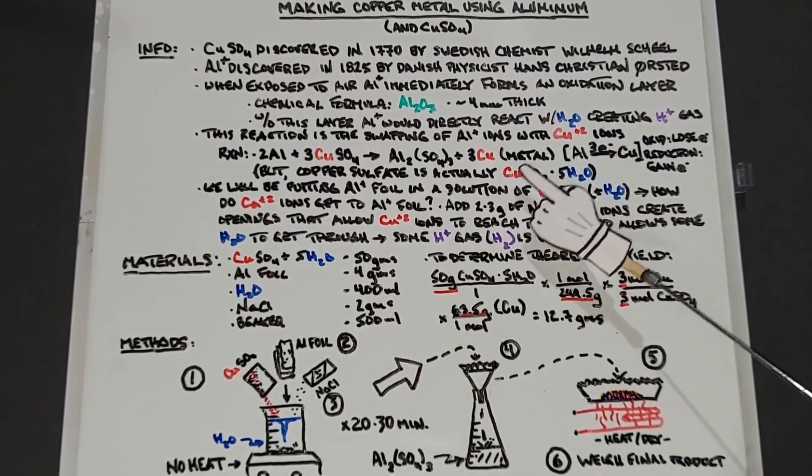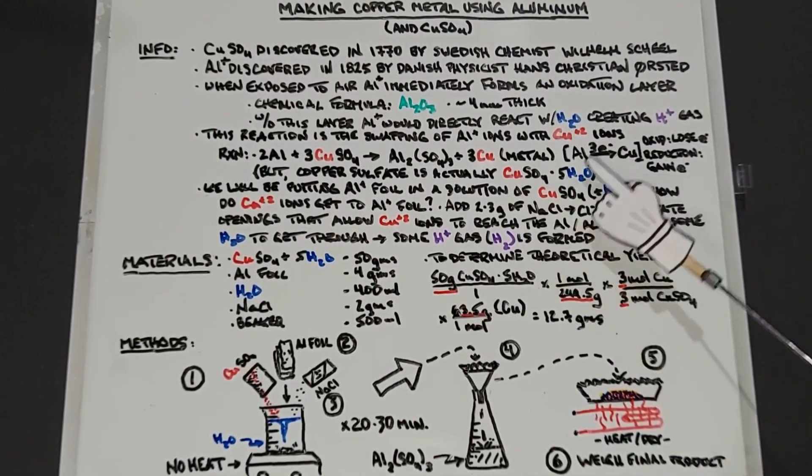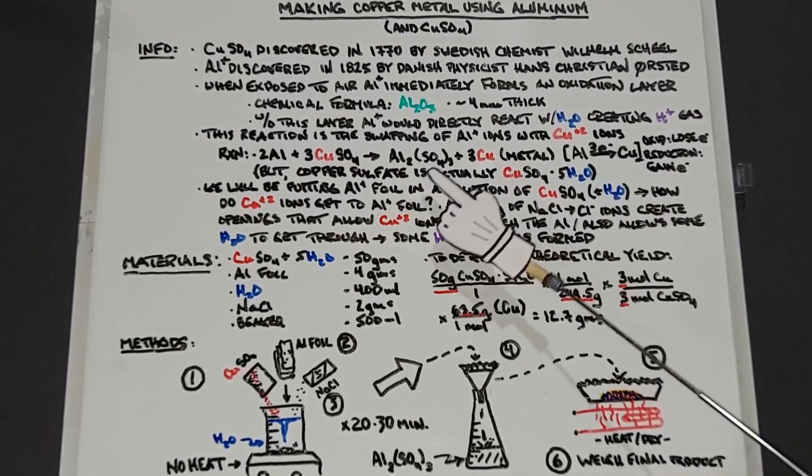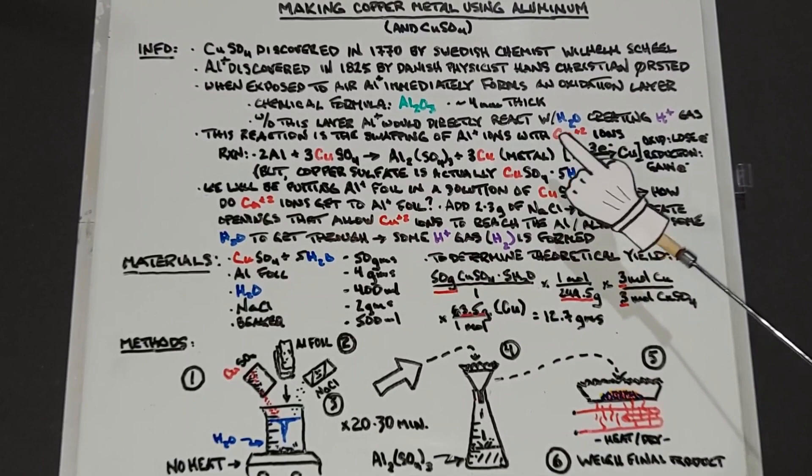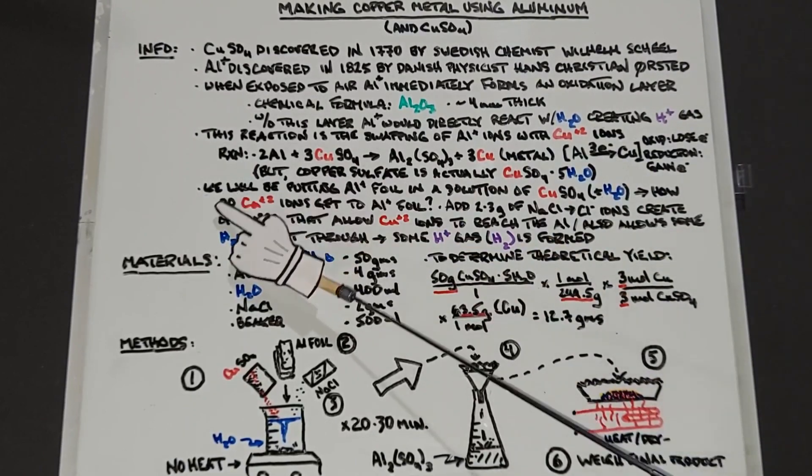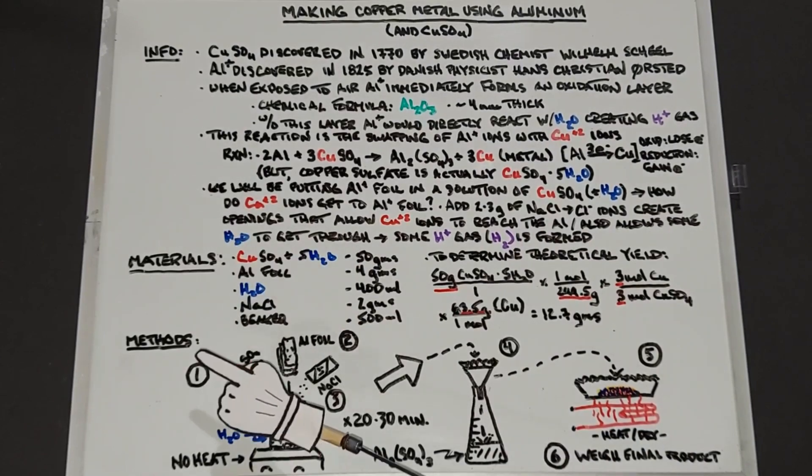But in reality, the copper sulfate that we're using is actually CuSO₄·5H₂O, copper sulfate pentahydrate. And this becomes important if you're ever trying to figure out the molecular mass of this product. If you don't add those waters in there, you will not end up with the right result.